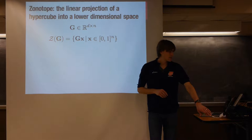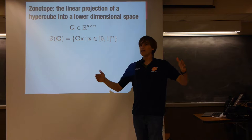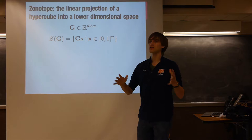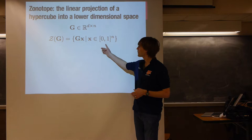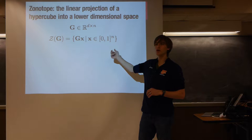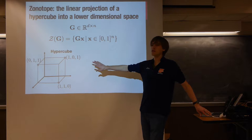With that, let's introduce what a zonotope is. Since this is the Purdue Numerical Linear Algebra seminar, we'll be introducing matrices as much as possible. Here we have a matrix G which is very wide but very short — D is a small fixed dimension and N is asymptotically large. A zonotope is the linear projection of a high-dimensional hypercube into a lower-dimensional space, R^d. The zonotope generated by matrix G is the set of all vectors Gx where x has entries between 0 and 1.